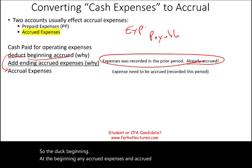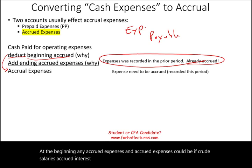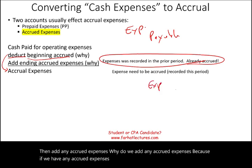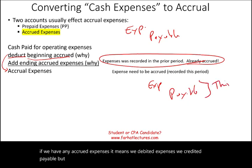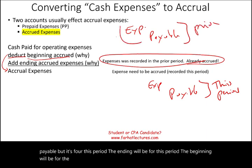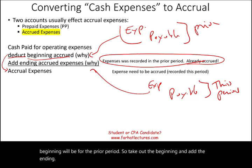Accrued expenses could be accrued salaries, accrued interest, or any accrued expense. Why do we add ending accrued expenses? Because if we have ending accrued expenses, it means we debited expenses and credited payable for this period. The ending belongs to this period; the beginning belongs to the prior period. So take out the beginning and add the ending, and you will come up with your accrual expenses.